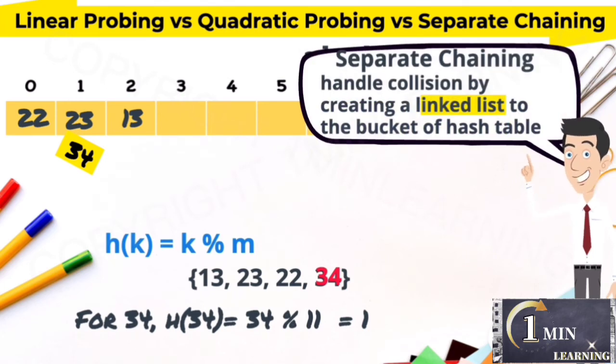Separate chaining is to handle collision by creating a linked list to the bucket of hash table. There is a collision at index 1. It is extended as a linked list to store 34.